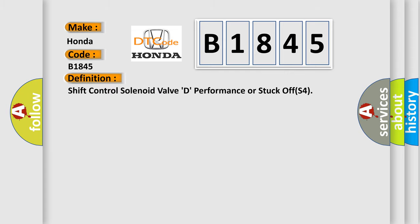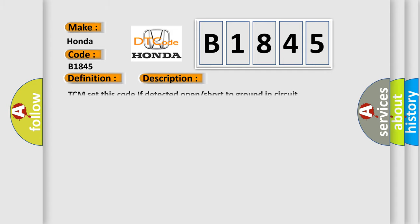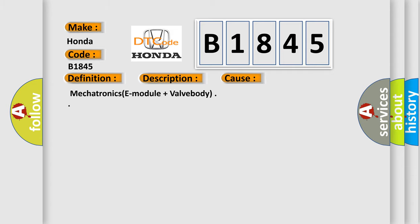The basic definition is: Shift control solenoid valve D performance or stuck-off. TCM sets this code if it detects an open or short to ground in the circuit. This diagnostic error occurs most often in these cases.